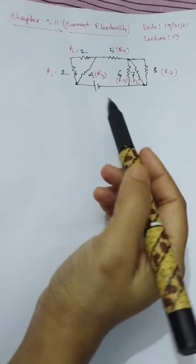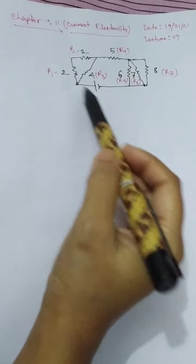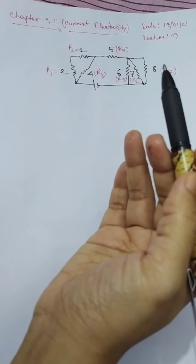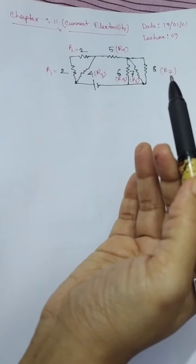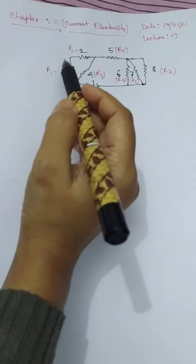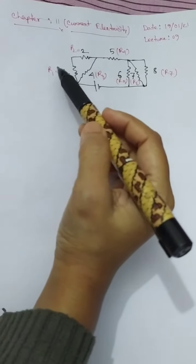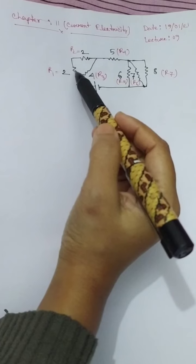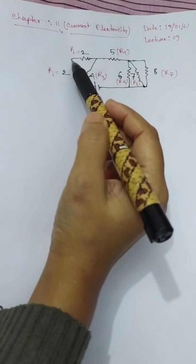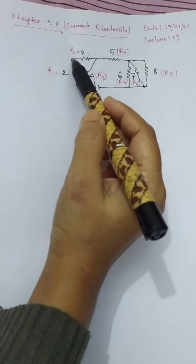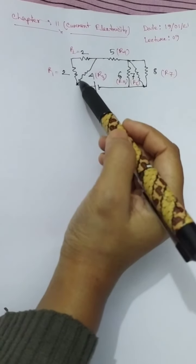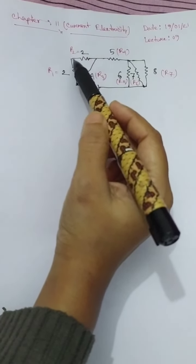First of all, I have told you that we will start calculating from one end of the circuit. If you look here, R1 and R2 — after R1 finishes, R2 starts at that same point, which means R1 and R2 are in series.